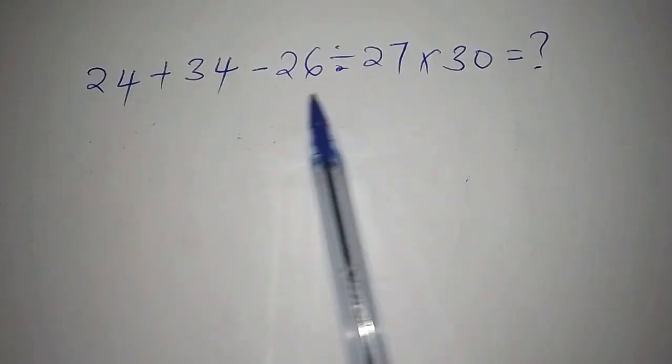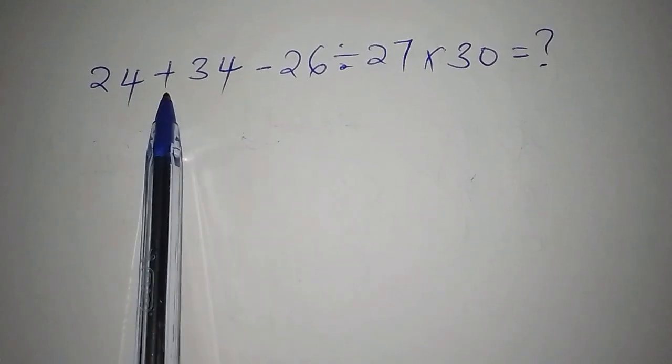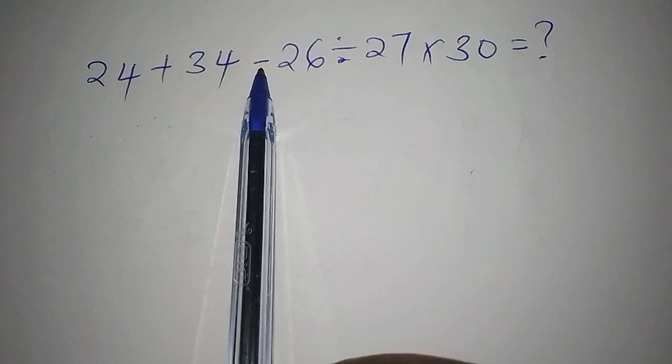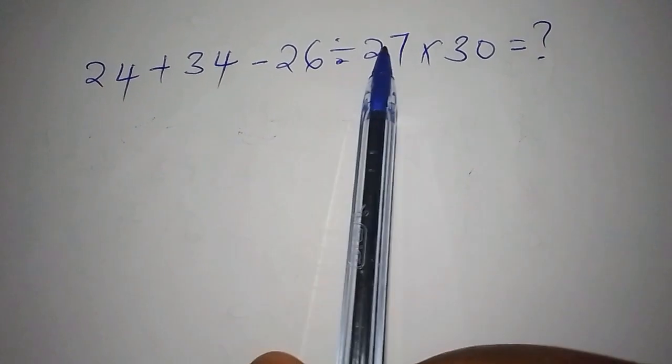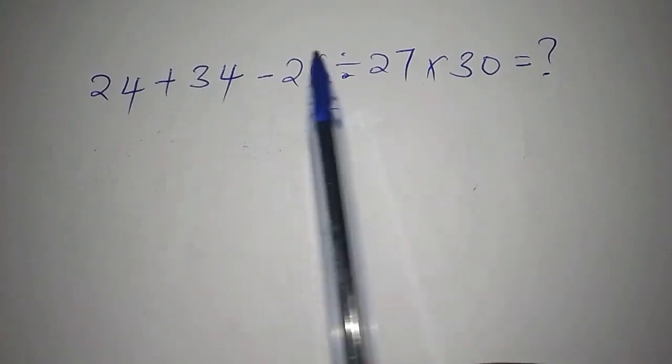So here, for us to work out this, we can check that we have various operations. We have the addition, we have the subtraction, we have the division, then we have the multiplication. In short, there are various different types of operations.